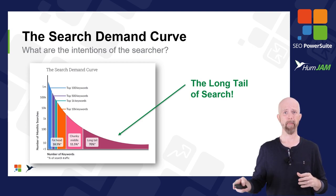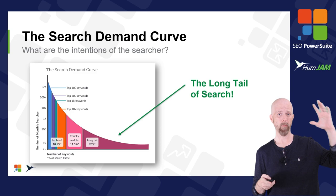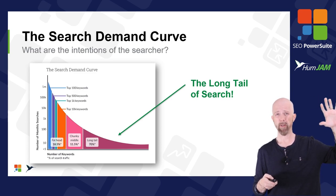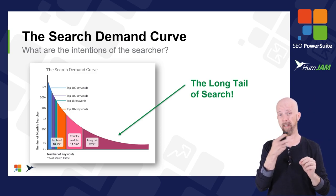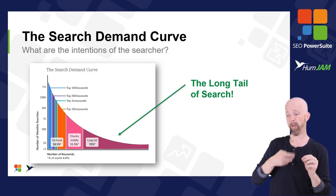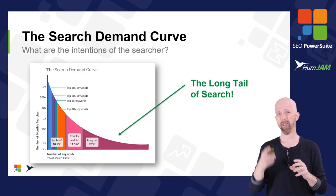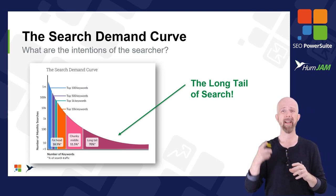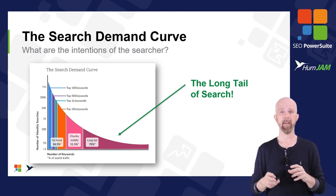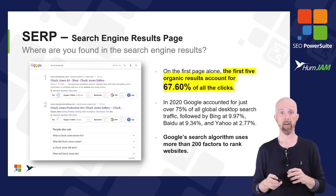It's all built on the search demand curve. The bigger words — called head words or fat words — are harder to rank for. The smaller, more specific words at the bottom are where we generally want to target: the long tail of search. We'll break that down in the keyword section.